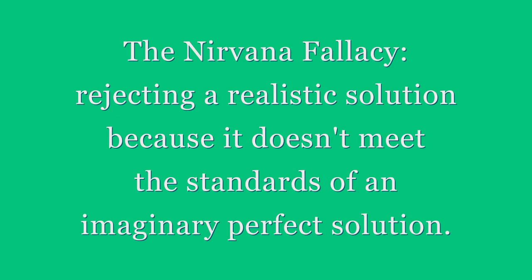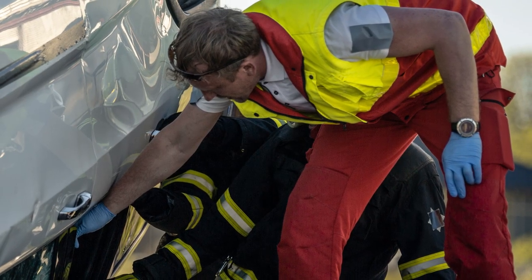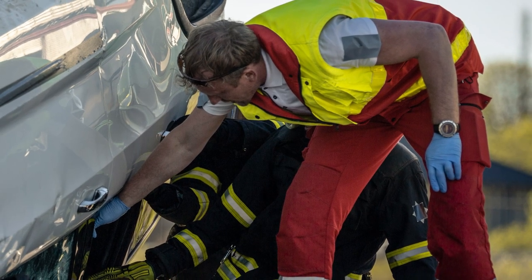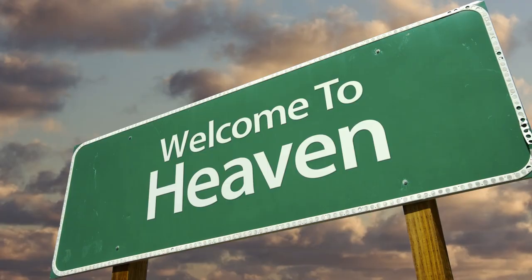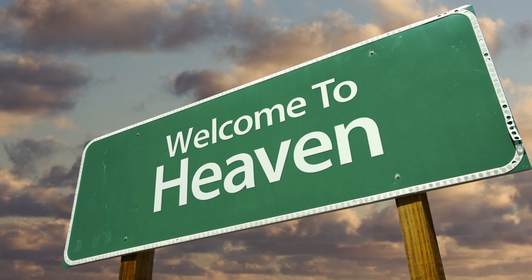So one important use of public choice is to counteract the Nirvana fallacy. The Nirvana fallacy is rejecting a realistic solution because it doesn't meet the standards of an imaginary, perfect solution. Here's an example of the Nirvana fallacy: some people have argued that seatbelts could trap a person in a car crash, so seatbelts shouldn't be worn. Well, the fallacy is that seatbelts save lives on average, of course. No solution is perfect.